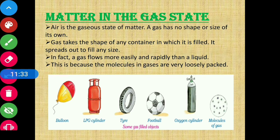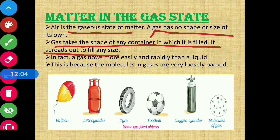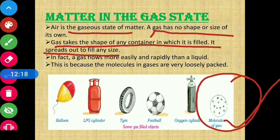Now we will discuss matter in the gaseous state. Air is a gaseous state of matter. A gas has no shape or size of its own. Gas takes the shape of any container it is filled into and spreads out to fill any size. Whatever space is available, gas will cover it completely because its molecules are so far apart that they fill the entire available space. That is why gas has neither a definite size nor a definite shape.